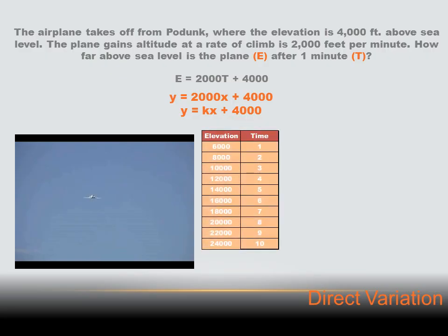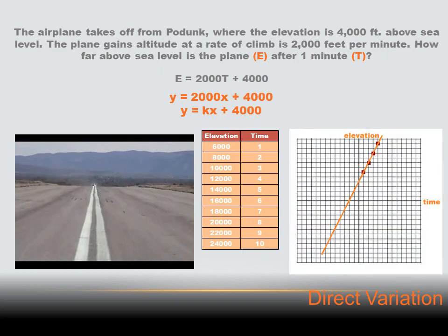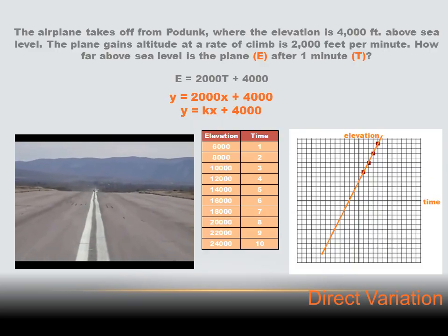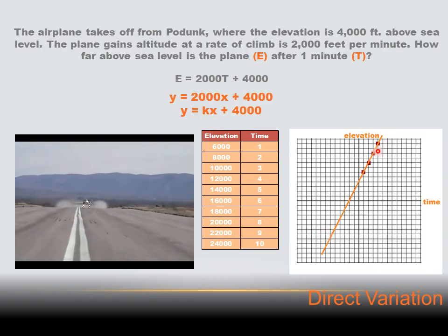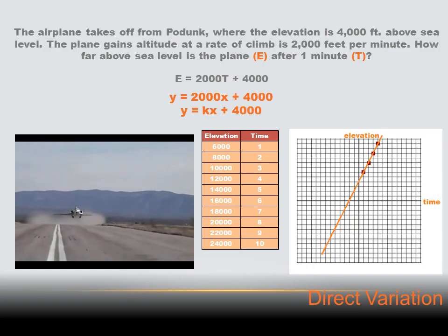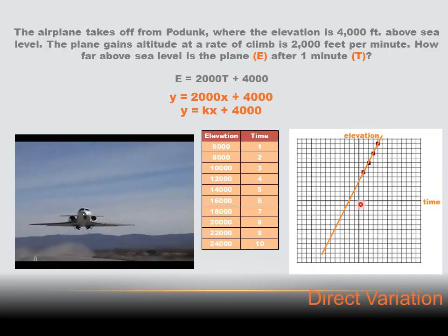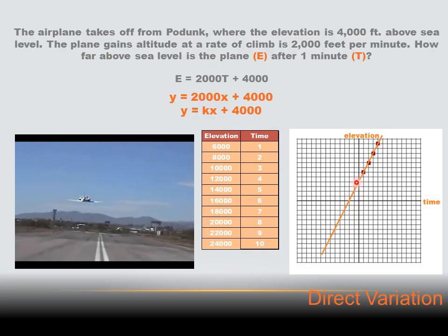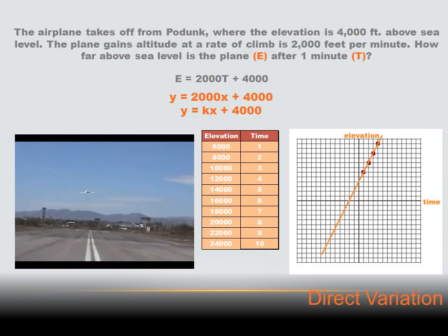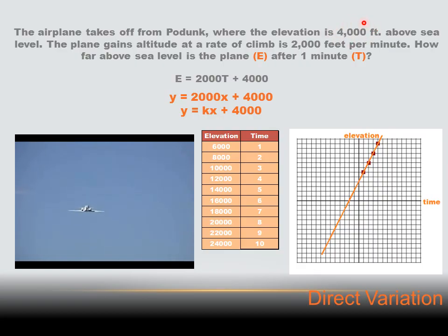If we graph this, we can come up with various elevations at various times. When we create a graph of that, we're going to see two things. Number one, it is a straight line — and that's good because all direct variations are represented by straight lines. But it doesn't go through the origin. It crosses the Y axis at 4,000 feet, because we're starting at 4,000 feet since the city is at 4,000 feet above sea level. That plus 4,000 in our equation prevents the line from going through the origin. So this is not a direct variation.